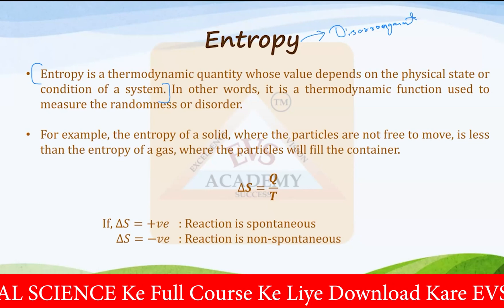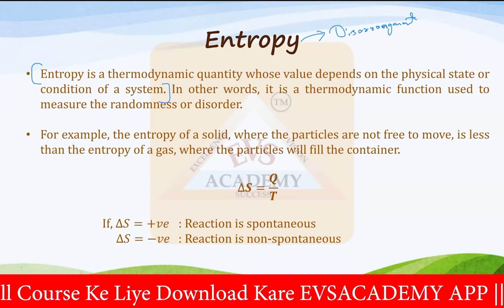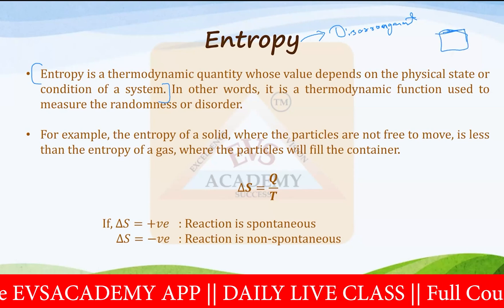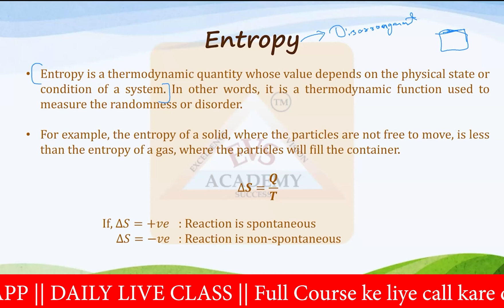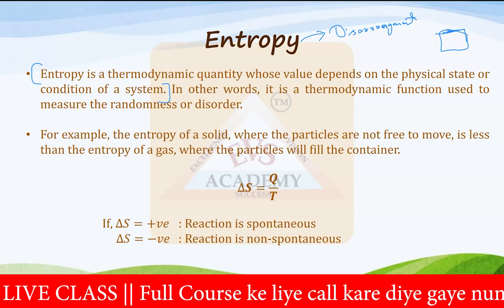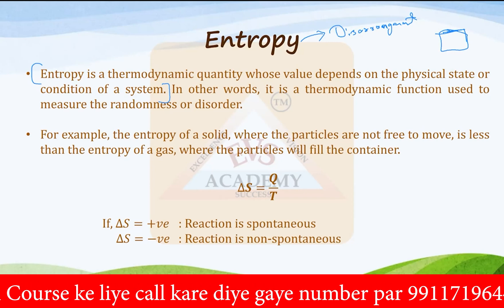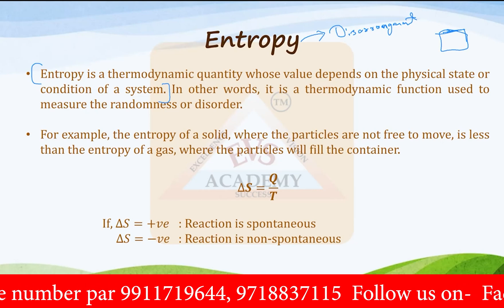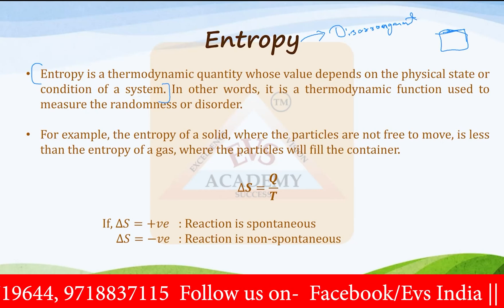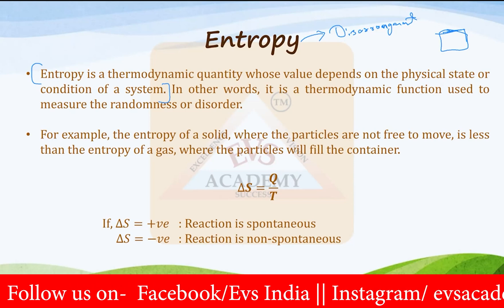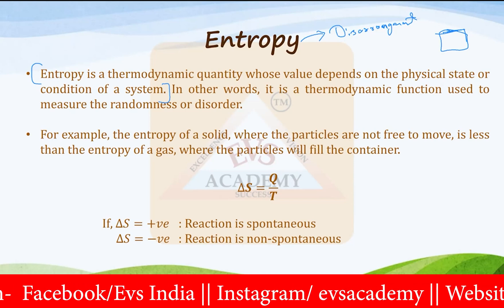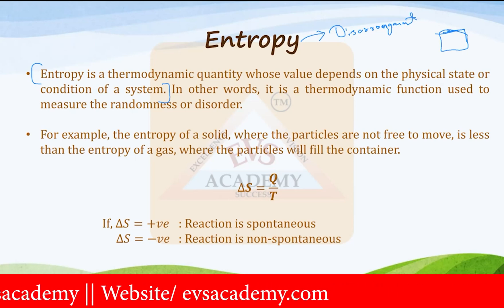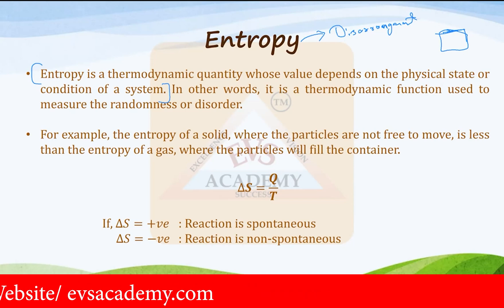Disarrangement means how disarranged a particular system is. If the system is very highly disarranged, we can say that the system is having high entropy. If everything is arranged, we would say that system is having low entropy. Just assume a room — maybe your friend's room — where things are totally messy, there is no arrangement. All the things are just everywhere; you can find lots of clothes on the chair, multiple books in the bed, containers and cups on the table.